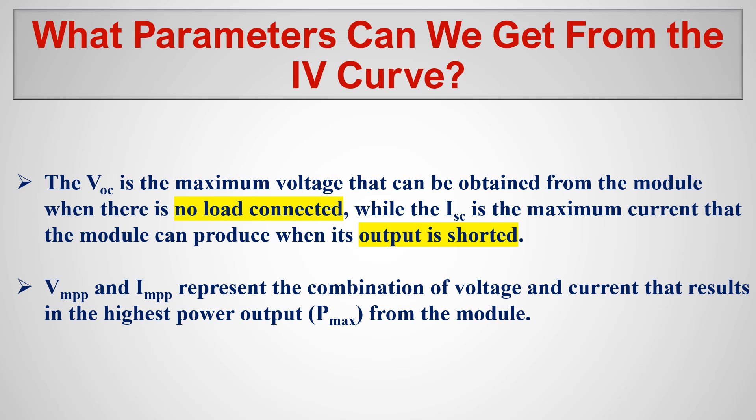The open circuit voltage is the maximum voltage that can be obtained from the module when no load is connected. The short circuit current is the maximum current the module can produce when the output is shorted. These two are specified on the panel because they tell us what safety measures we must take when designing the system — both the open circuit voltage and short circuit current are dangerous.